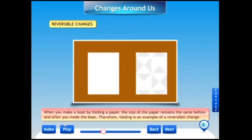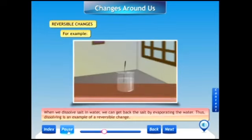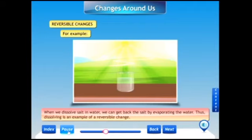Next example: when we dissolve salt in water, we can get back the salt by evaporating the water. Thus, dissolving is an example of a reversible change.